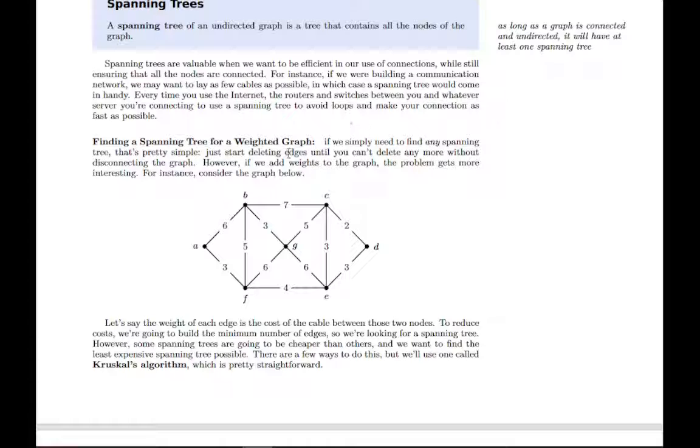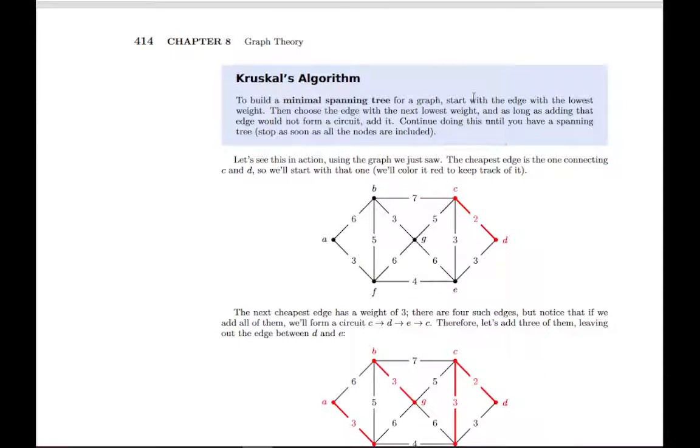If you have a weighted graph, then there's a way to pick a spanning tree that's the most efficient. Any spanning tree, you can just start deleting edges until you can't delete any more without disconnecting it. But if you have weighted graphs and you want to carefully pick the spanning tree with lowest weights possible, then it's a little bit more interesting. We have an algorithm for this as well. This is called Kruskal's algorithm, and it's a pretty simple one. Basically, you start with the edge with the lowest weight, add that one, and then you just keep going. Add the ones with the lowest weights that you can, as long as it doesn't form a loop or circuit, because doing that would make it more than a tree.